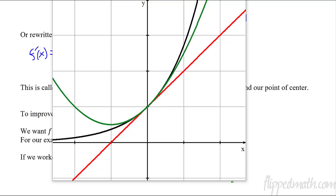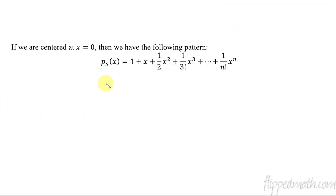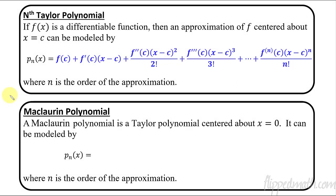And then we can keep going — third order, fourth order, with the third derivative, fourth derivative — and the pattern becomes: 1 plus x plus one-half x squared plus x cubed over 3 factorial, all the way to x to the n over n factorial. Here is our formula for Taylor polynomials. If you have a differentiable function, a Taylor polynomial approximating f centered about x equals c is: f of c, plus f prime of c times (x minus c), plus f double-prime of c over 2 factorial times (x minus c) squared, continuing through n factorial.